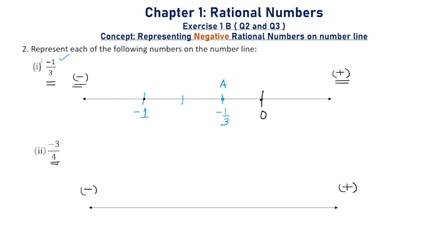Likewise, question number 2 part (ii) is minus 3 by 4. Again, it is a negative number, so it will lie on the left of 0. We divide the section between 0 and minus 1 into four equal parts. The third part out of four parts gives us minus 3 by 4, and we name it as point B.